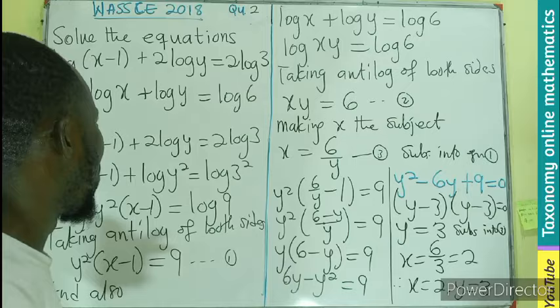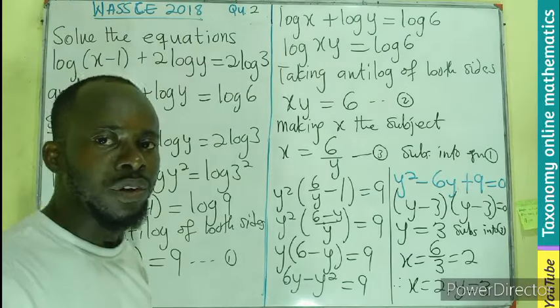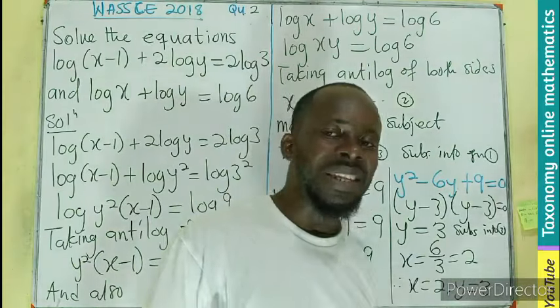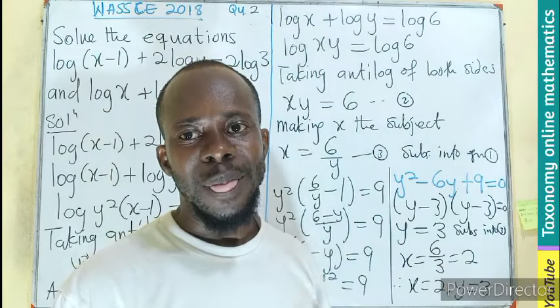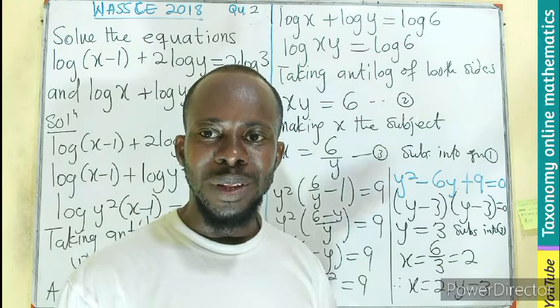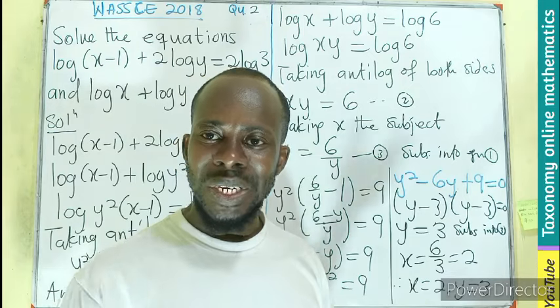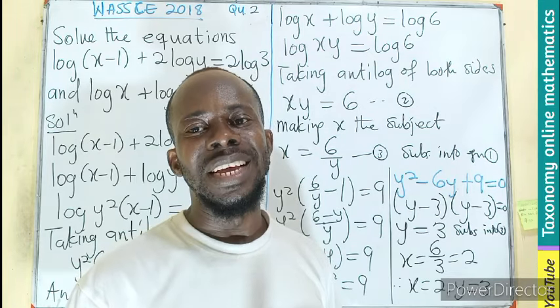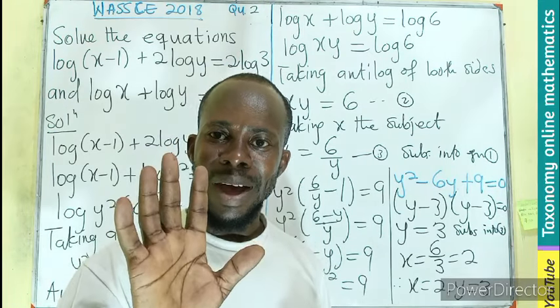So the values of x and y that will satisfy these two simultaneous equations will be 2 and 3 respectively. I believe you follow through. Get your understanding. Comment your thoughts in the comment section. Share with somebody. Subscribe. And God will bless you. Bye-bye.